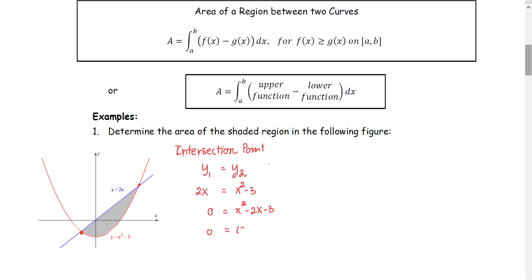Factor completely. We have x minus 3 times x plus 1. We get x equals 3 or x equals negative 1 as the intersection point.